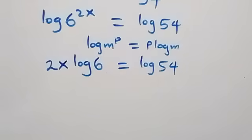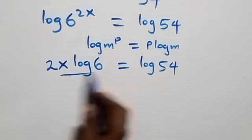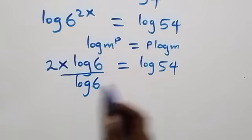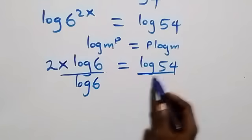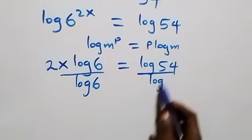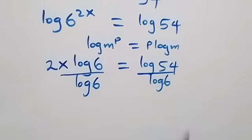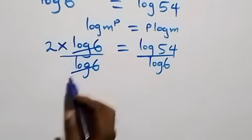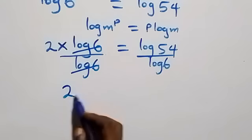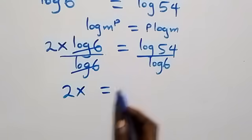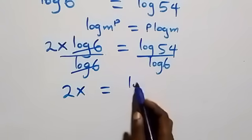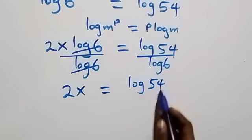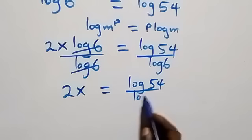The next step: we divide both sides by log 6. Dividing this side by log 6 and also this side by log 6 — the log 6 terms cancel each other, and we have 2x left, which equals log 54 over log 6.